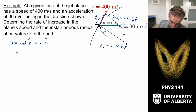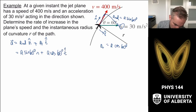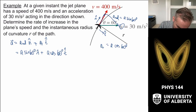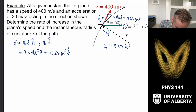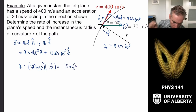The tangential component is going forward. So in the radial direction we have a sine of 60 degrees in n-hat, plus the tangential component a cosine of 60 degrees in t-hat. The tangential component, a_t, is the rate of increase of the plane's speed. That is a_t equals 30 meters per second squared times cosine of 60 degrees, which is one half, so this equals 15 meters per second squared.